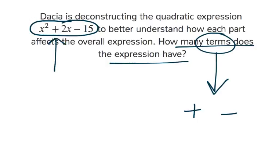Well, in this case, you see a plus sign here between the x squared and the 2x, and a minus sign here between the 2x and the 15. That means we actually have three terms.